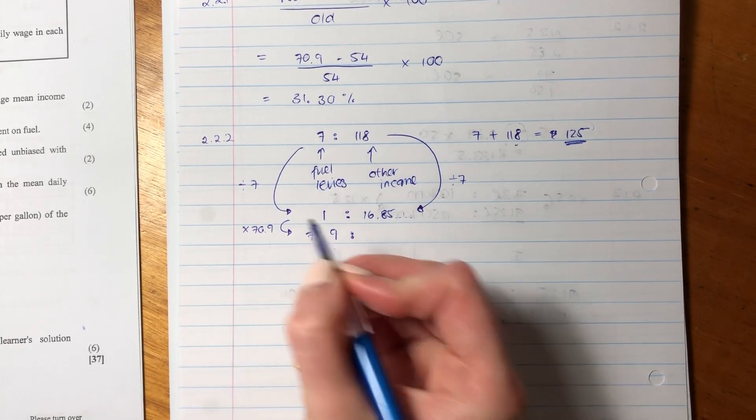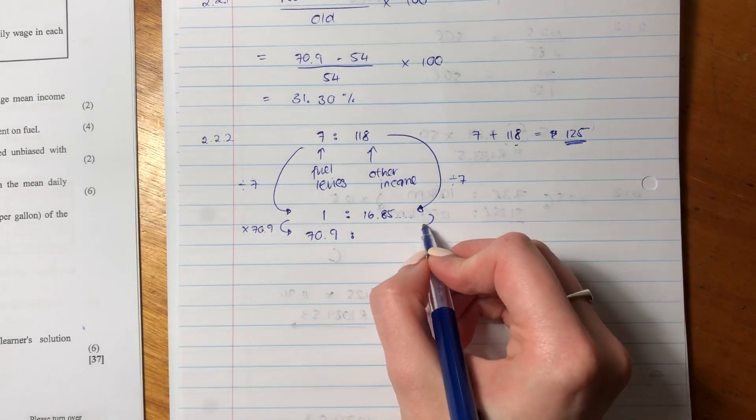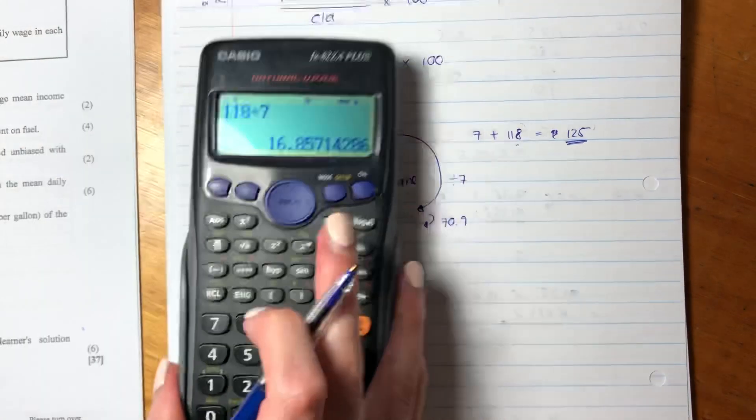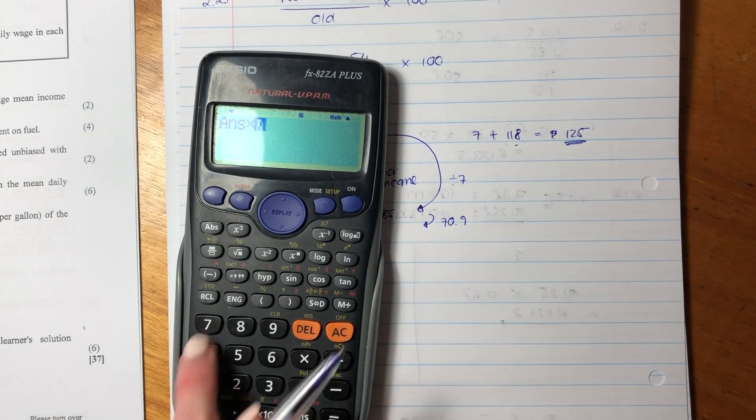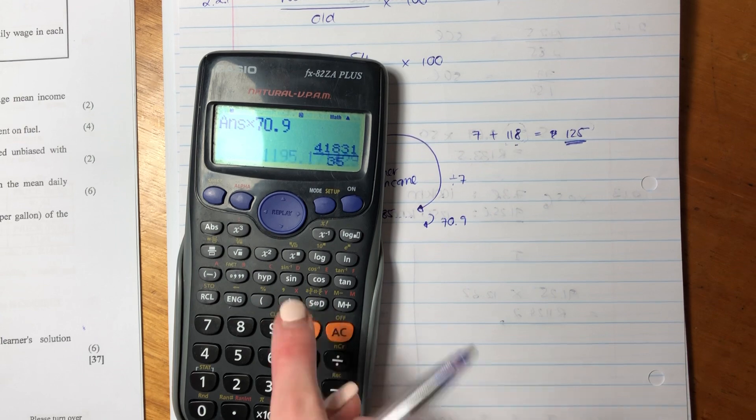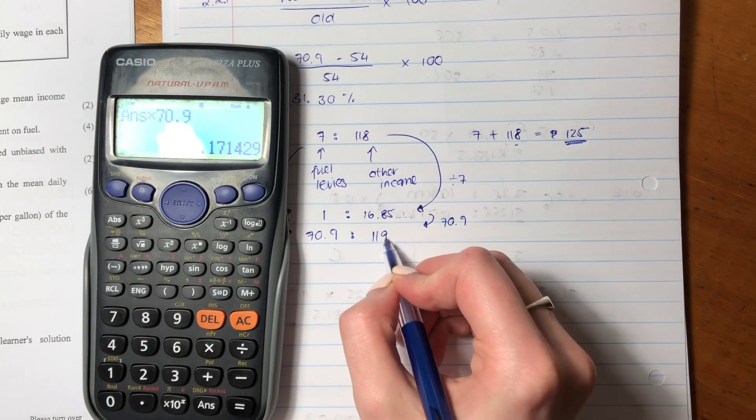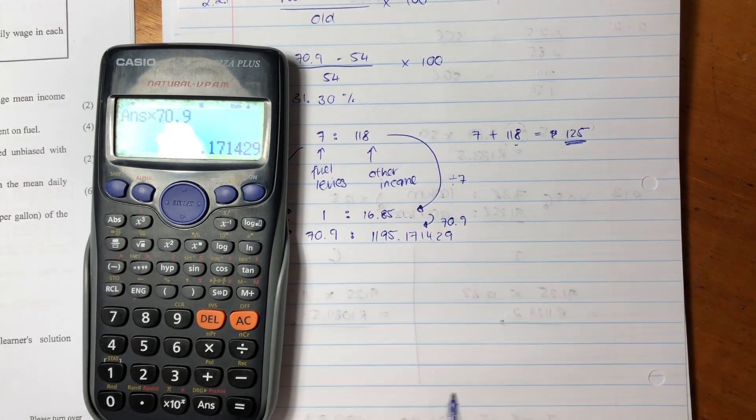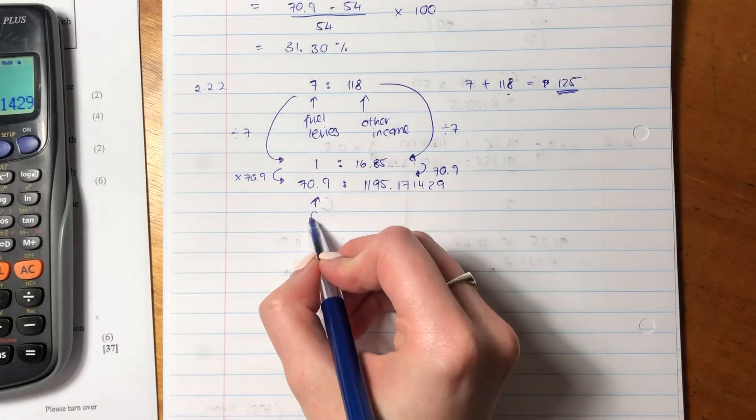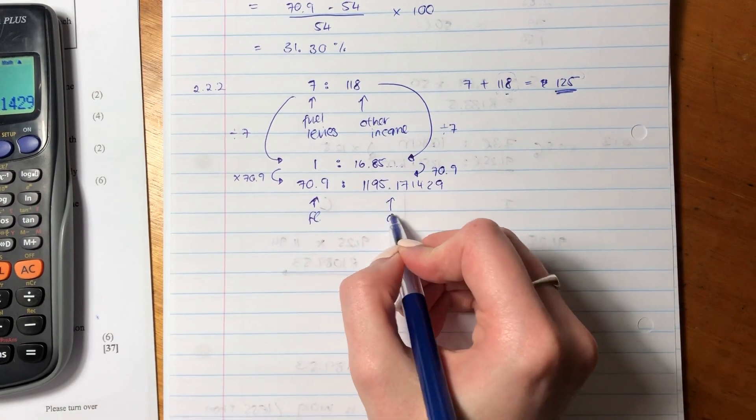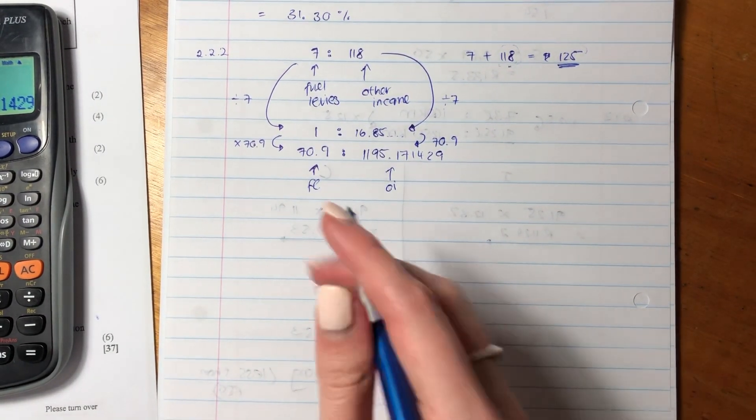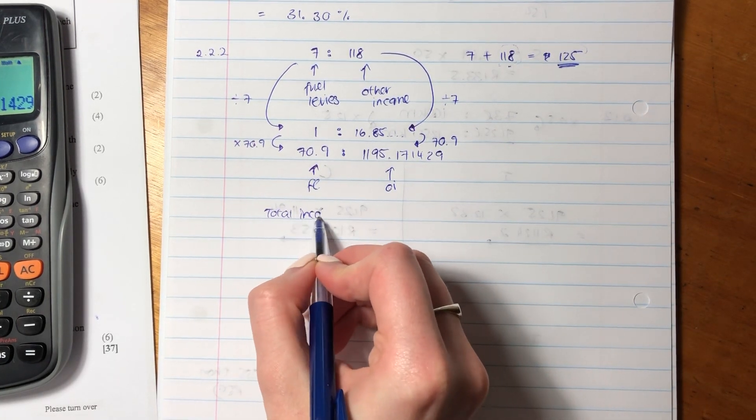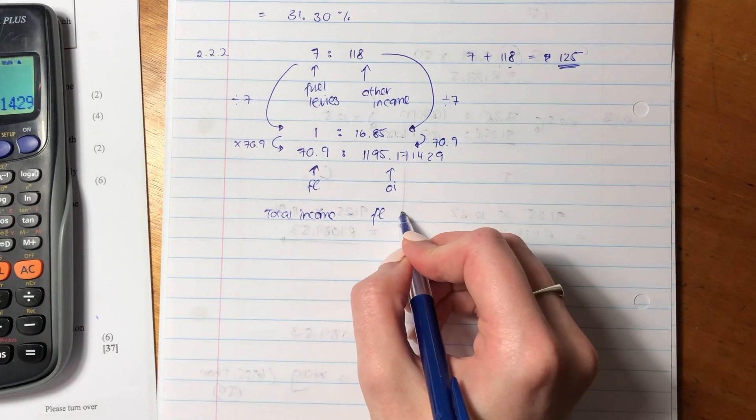Now, we know that our fuel levy for the 2017-2018 year is 70.9 billion. So we're going to say, this is 70.9 billion. You don't have to put the billion in, you can just keep it in this format because when you do it on the other side, it will also be in billion. So what did we have to multiply that side by to get 70.9? We had to multiply it by 70.9. What we do to the one side, we must do to the other side.